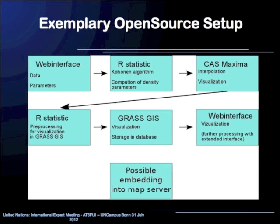Here is shown the proposed open source setup. It begins with data collection by a web interface that can be adapted for individual user needs. The data is then processed to a statistical software R, which is started by a system call of GRASS GIS.